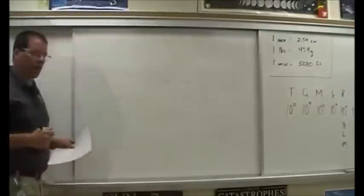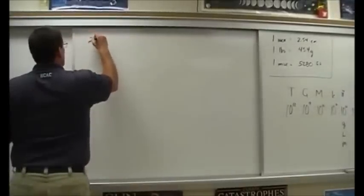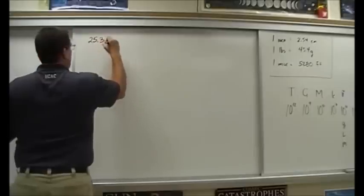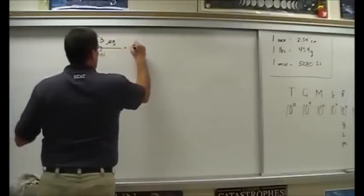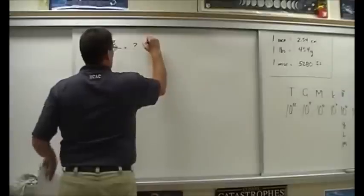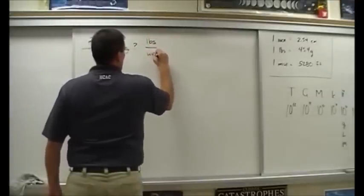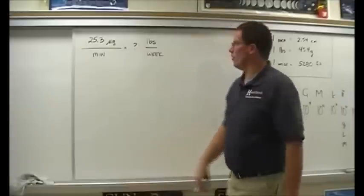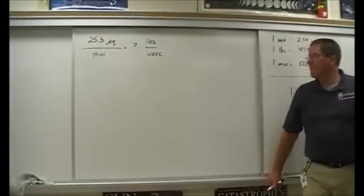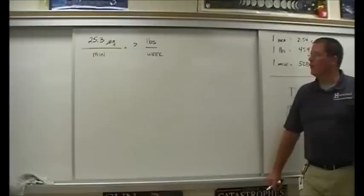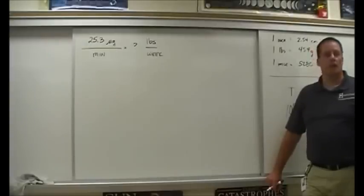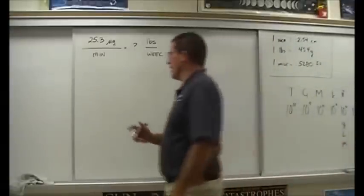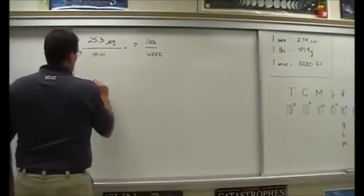Let's look at the next one. Somebody earlier said it was impossible to do this. 25.3 micrograms per minute — and it wants to know how many pounds per week. It's a rate problem. There are two units on there. How do we start? Write down what we know. You've got to start with what we know.